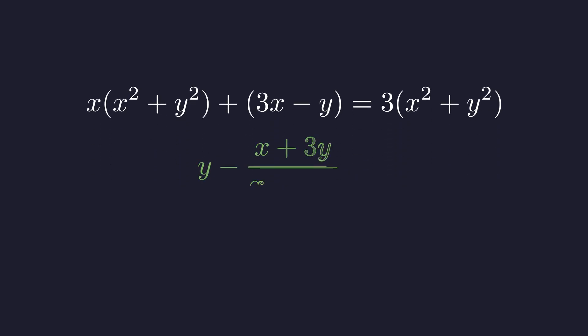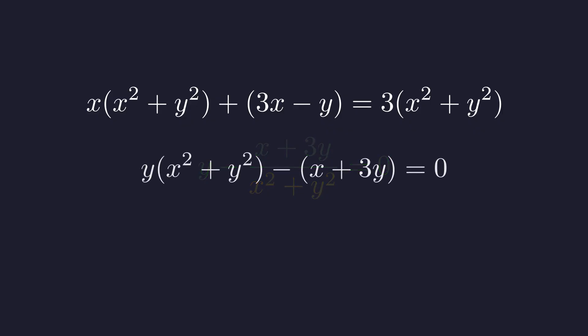Now for the second equation. Again, we multiply by x squared plus y squared. This gives us y times the quantity x squared plus y squared minus the quantity x plus 3y equals zero.